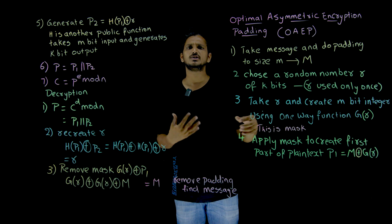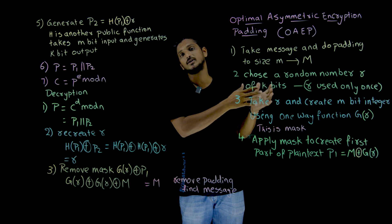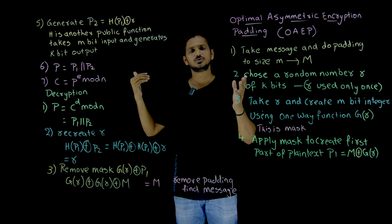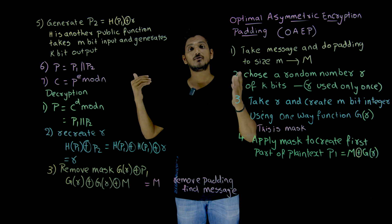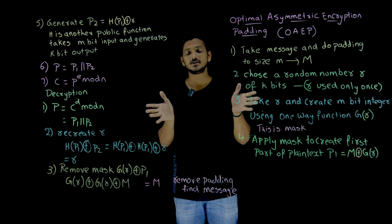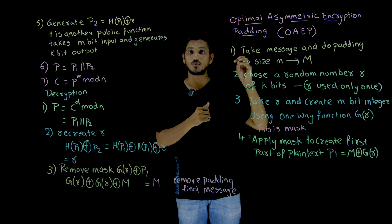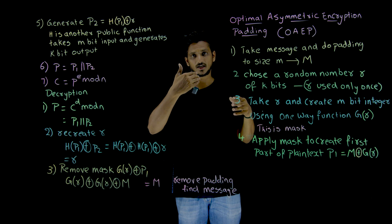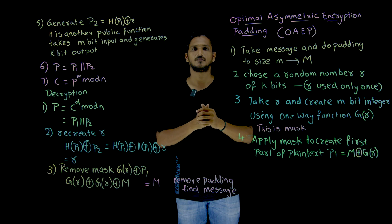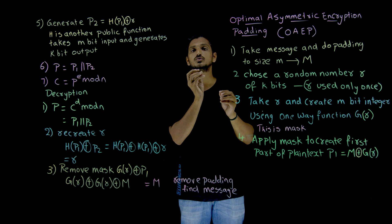So what is this one-way function, and which function do we have to use? In reality, we are going to use complex one-way functions. In our previous classes, we already discussed substitution, permutations, and one-way functions. You can elaborate the functions, reduce bits, or increase bits. In reality, there are many complex functions that take k bits and generate m bits - they are one-way, meaning you cannot recreate the input. You can use any one. In our example in the next class, we are going to use small functions.